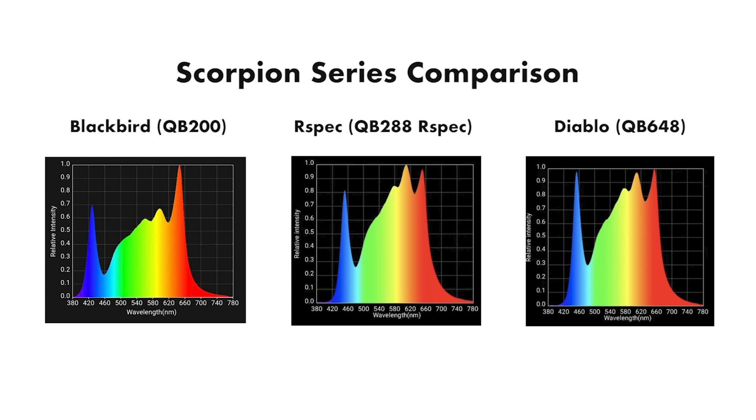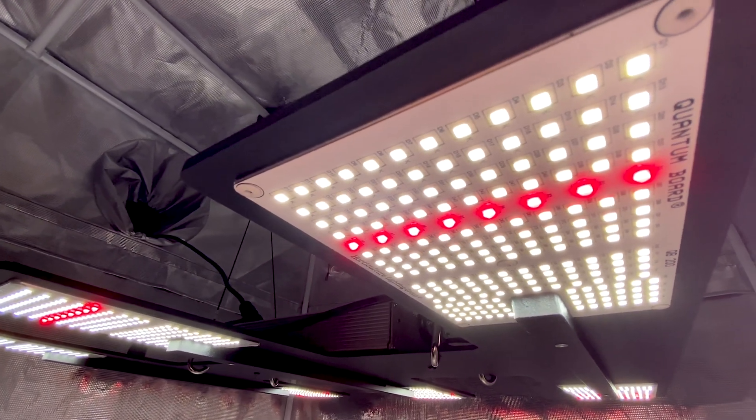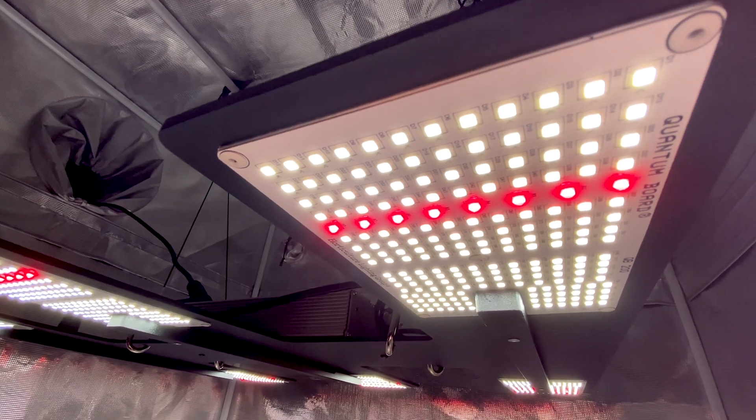The QB200 spectrum contains the largest bump in 660nm red compared to the R-Spec and Diablo spectrum. HLG might have done this to increase the efficiency on the boards. While I thought the Blackbird was awesome overall I'd like to see HLG bump up the light output and efficiency on the QB200s in the near future.